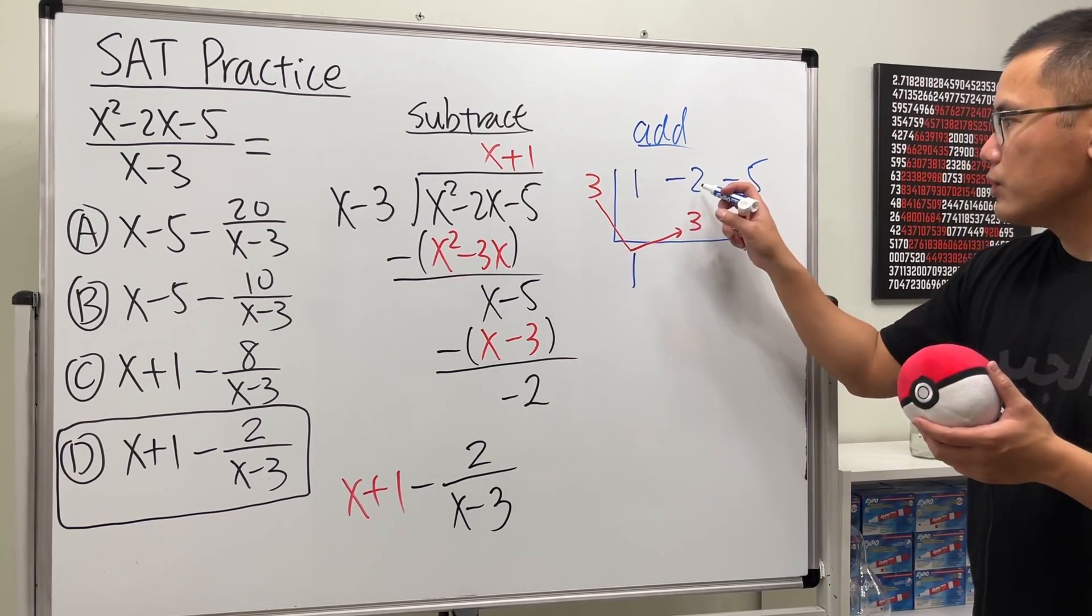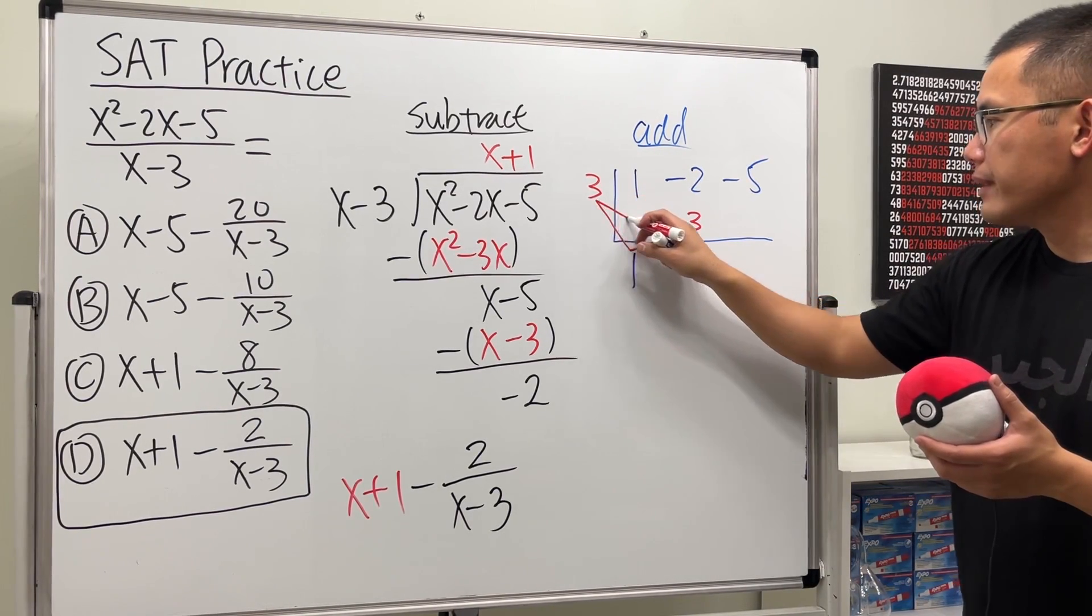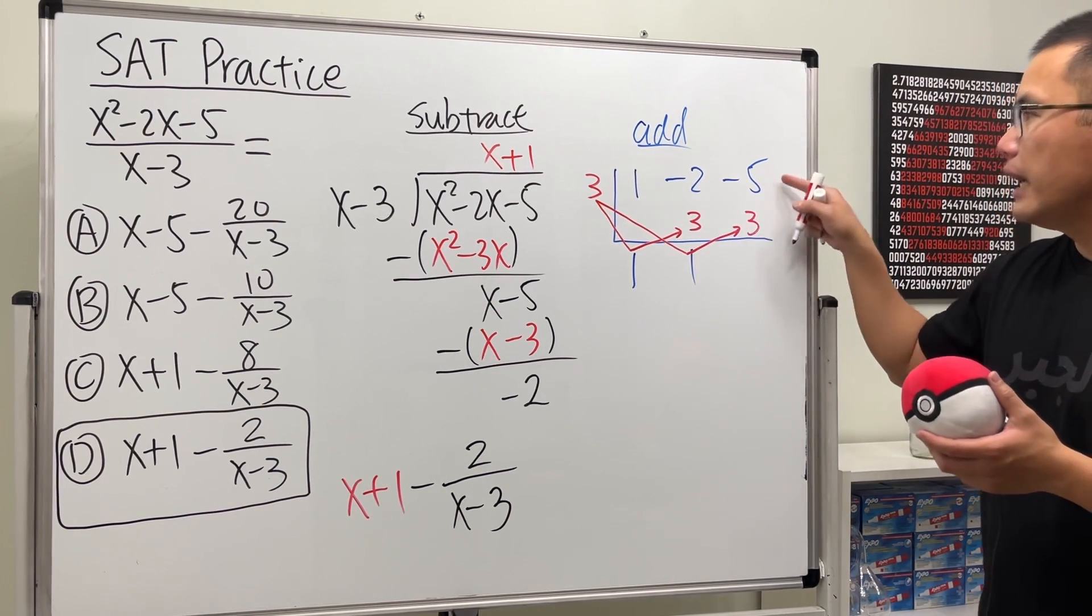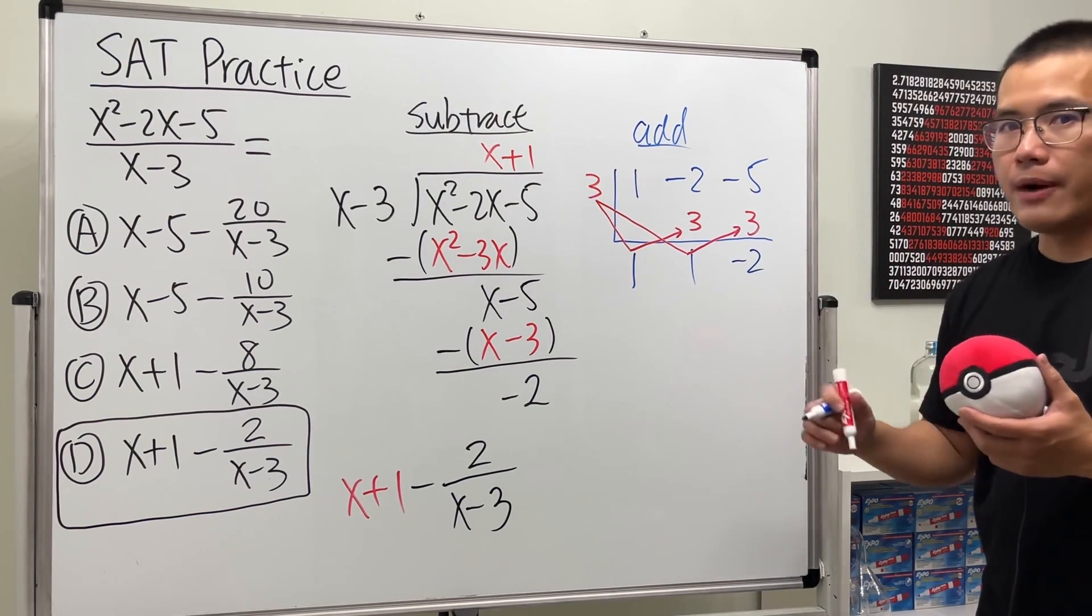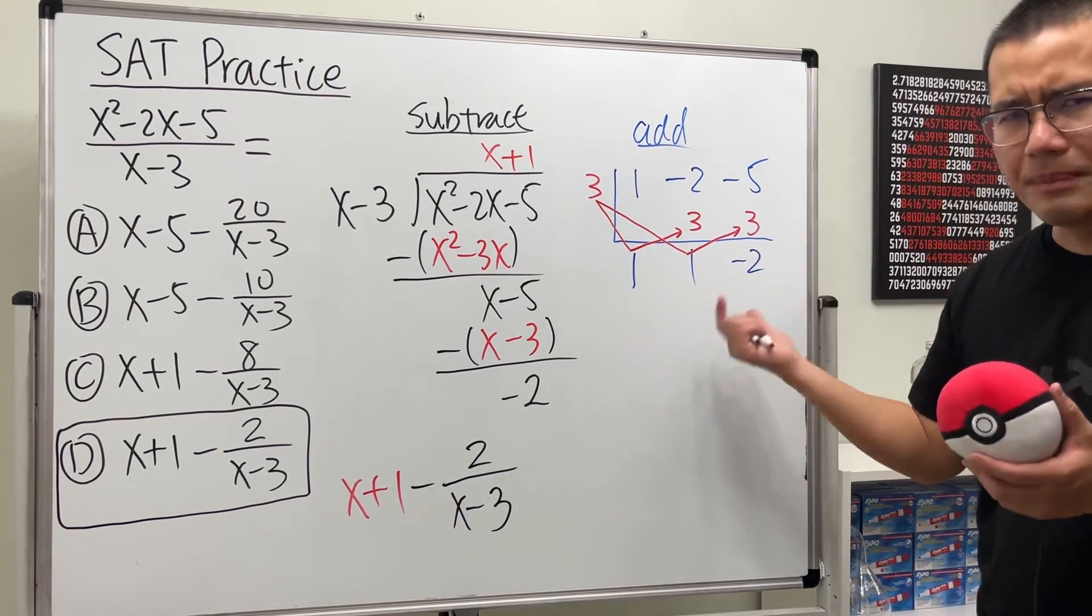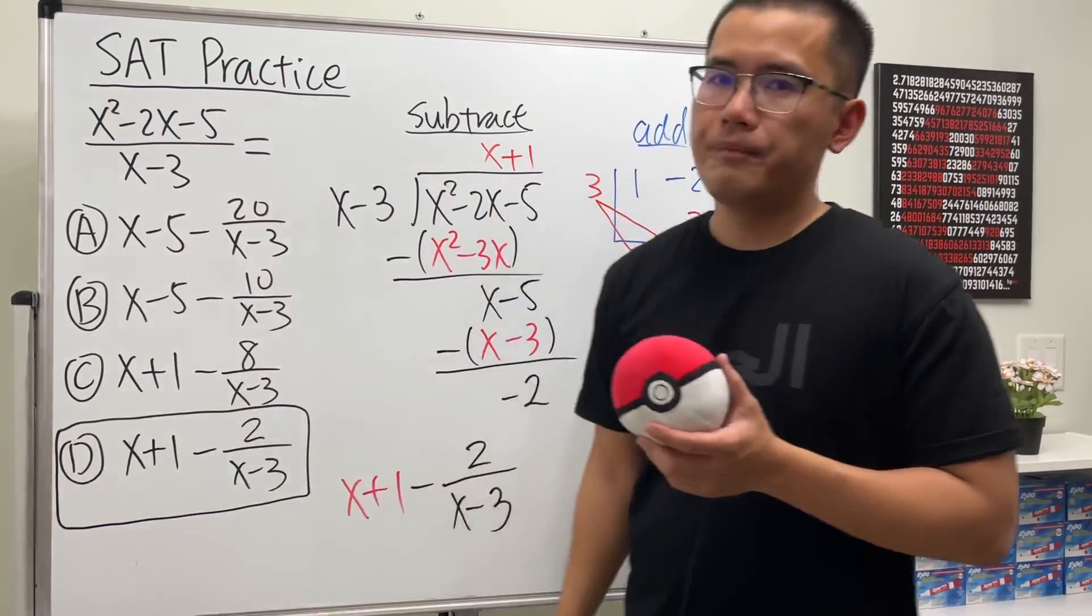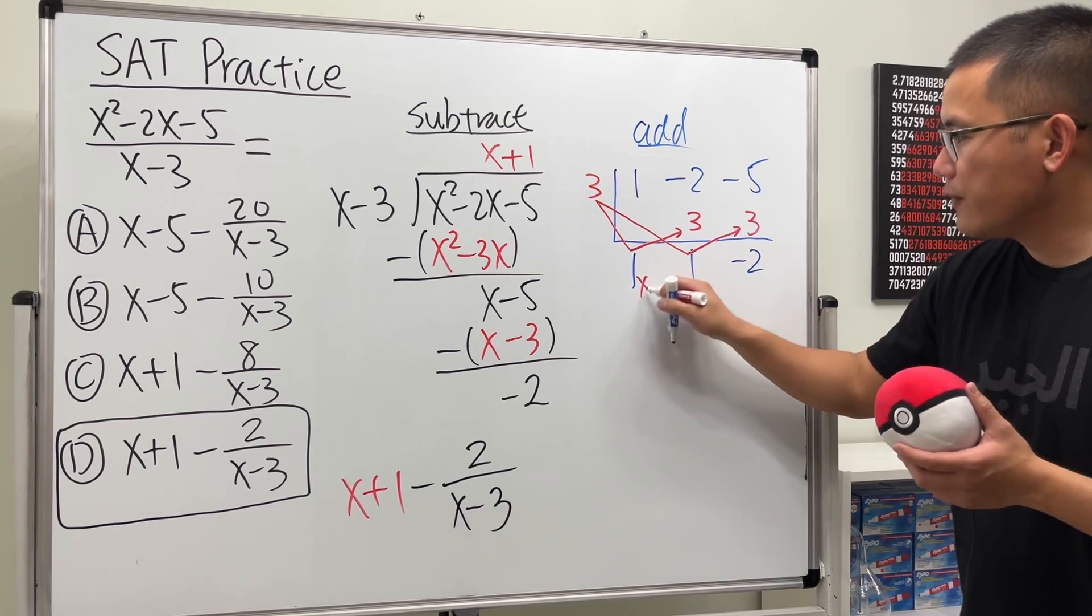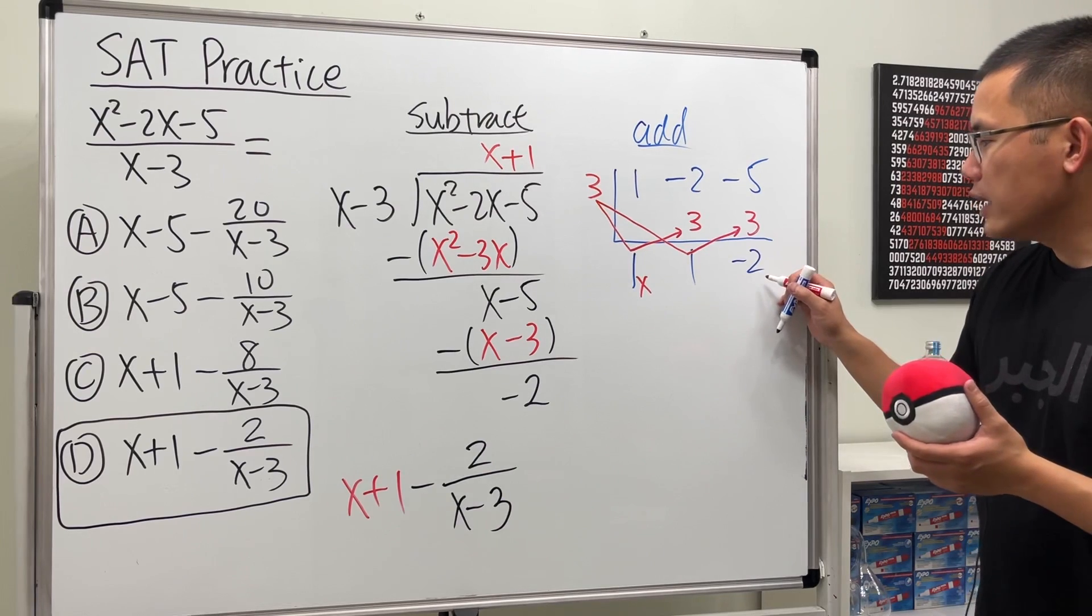Okay, negative 2 plus 3 is 1. So that's pretty good. And continue, we take 3 times this, which is 1, right? So 3 times 1 is 3. And then we put it here. And again, we add. Negative 5 plus 3 is negative 2. Now, be really careful. This is how we are going to write down the answer for this. This is much shorter, but it might be tricky at the end. Remember, originally we started with x squared. So that means, at the end here, when we read out the answer, this right here will be x to the first power. And then this right here will be the constant term, meaning no x. And this right here will be the remainder.